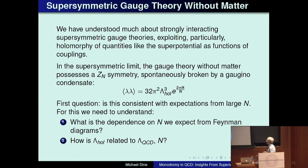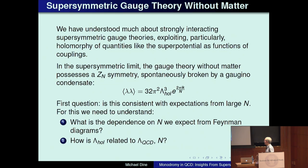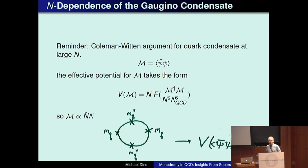We can write a formula for the gaugino condensate: it's 32 pi squared times the holomorphic lambda cubed, times e to the 2 pi i k over N, where k can take N values corresponding to the breaking of the symmetry. The first question we can ask is whether this is consistent with expectations from large N. For this we need to understand the N-dependence expected from Feynman diagrams for the gaugino condensate, and how this holomorphic lambda is related to lambda QCD.